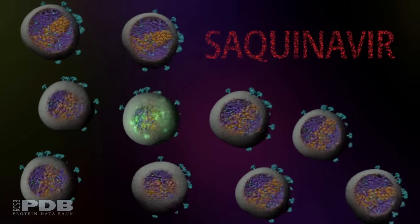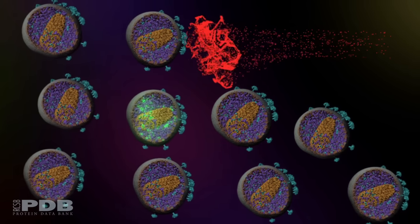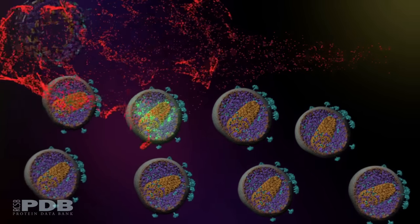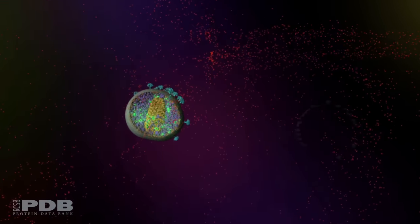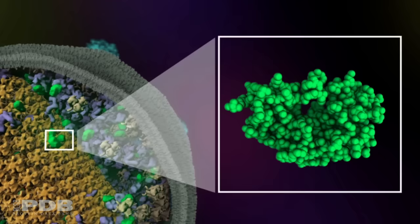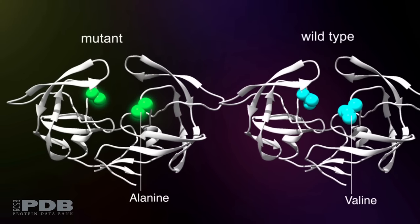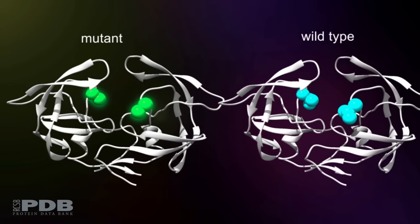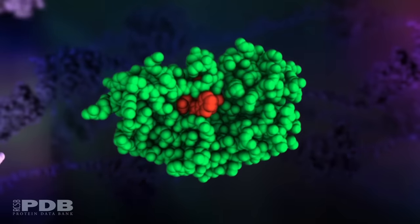For instance, when patients are treated with drugs that block HIV protease, most of the viruses are destroyed, but rare mutant forms of the virus survive. These mutant viruses make a mutated form of the protease. This protease resists the binding of drugs, but can still cut the viral polyprotein.